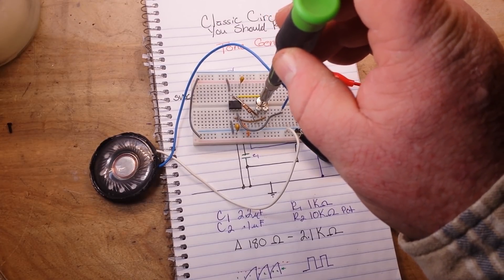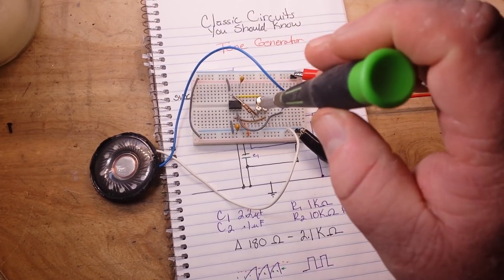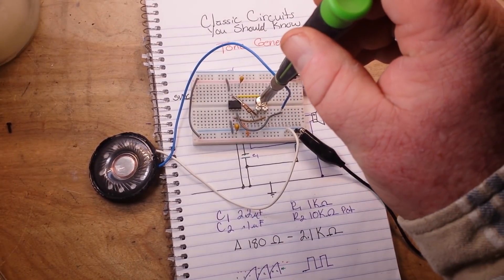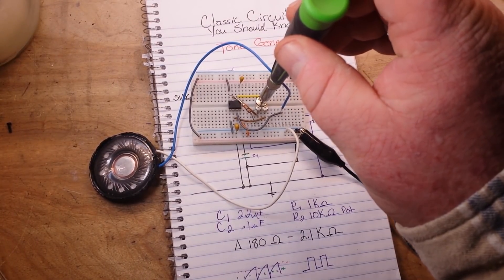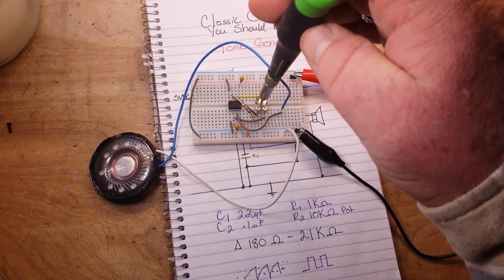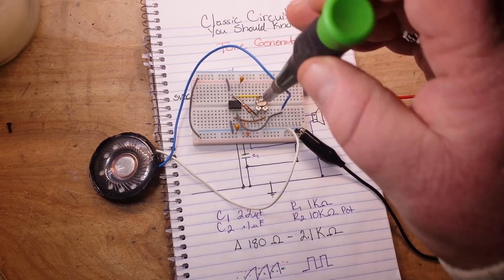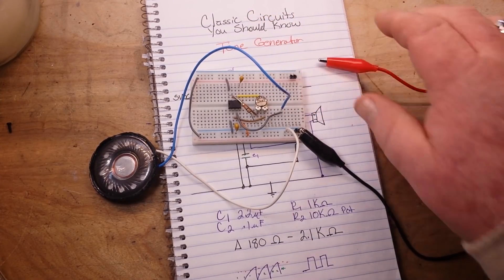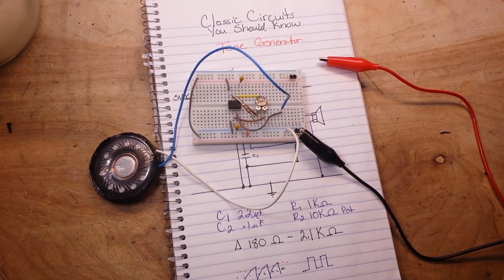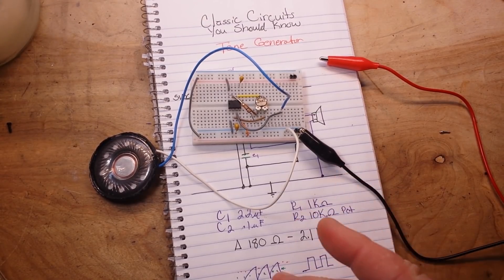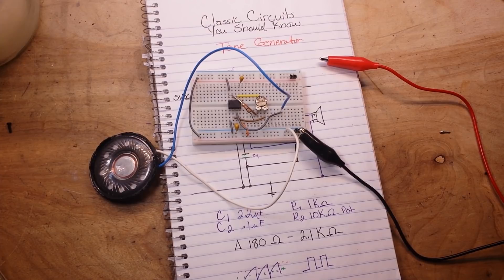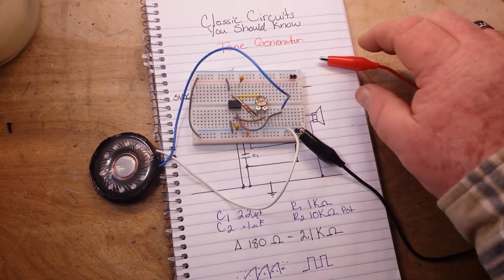We can lower it down, we can bring it up, and that's giving us a range of 1900 hertz that we can actually change the frequency of this circuit.